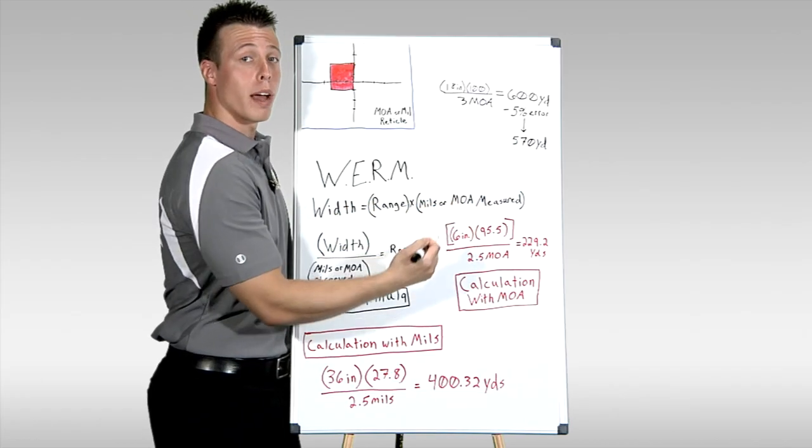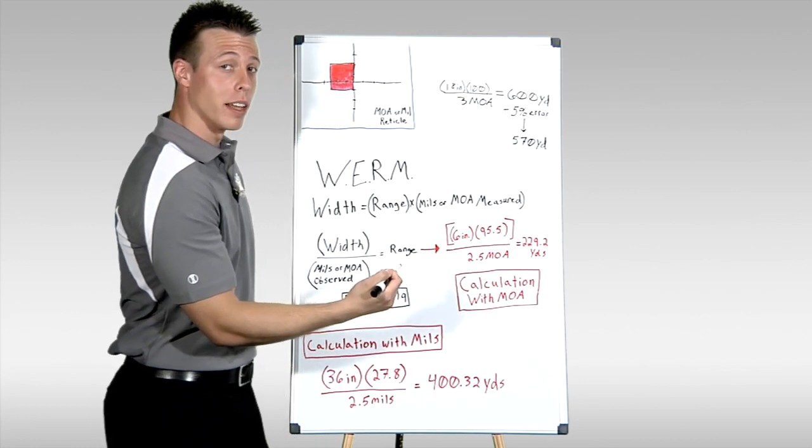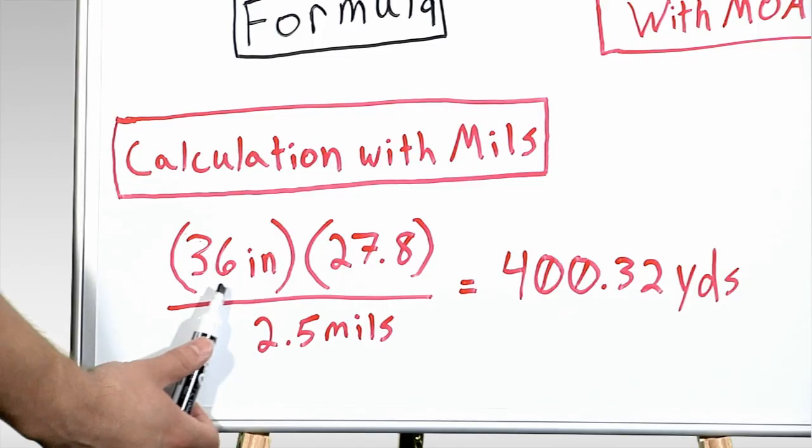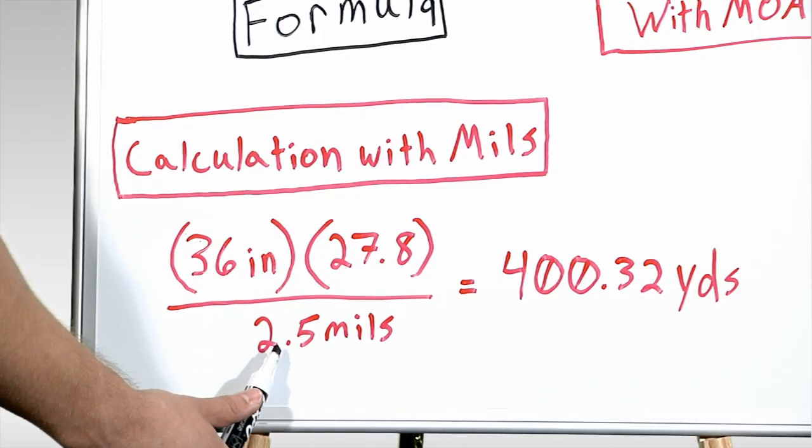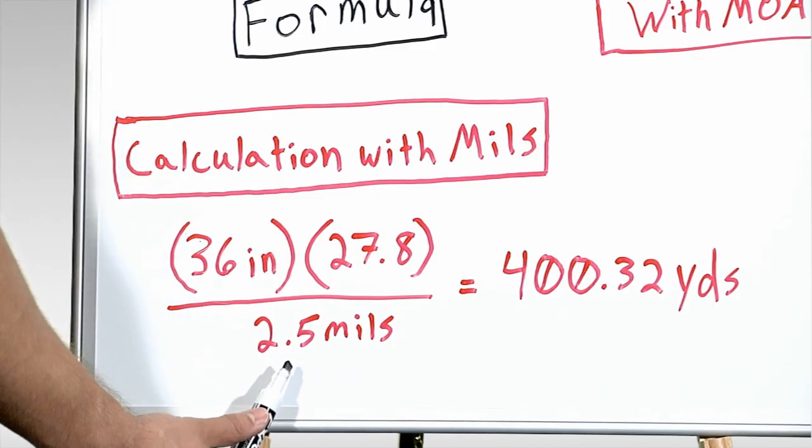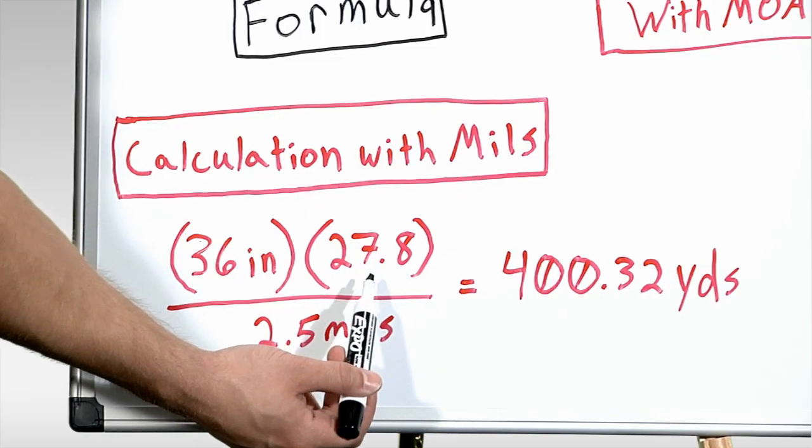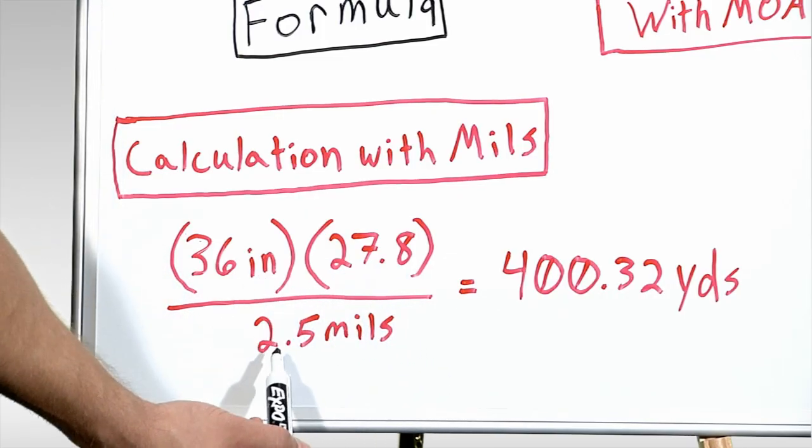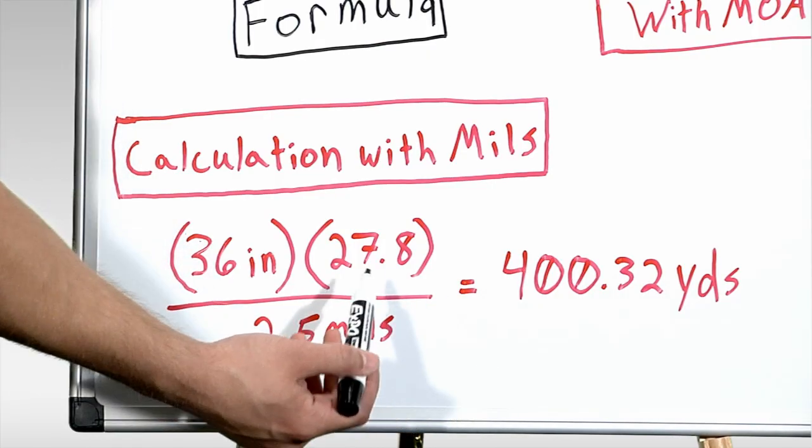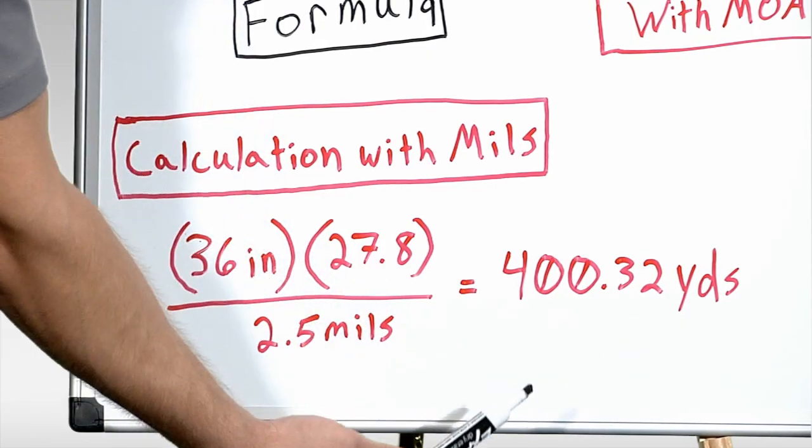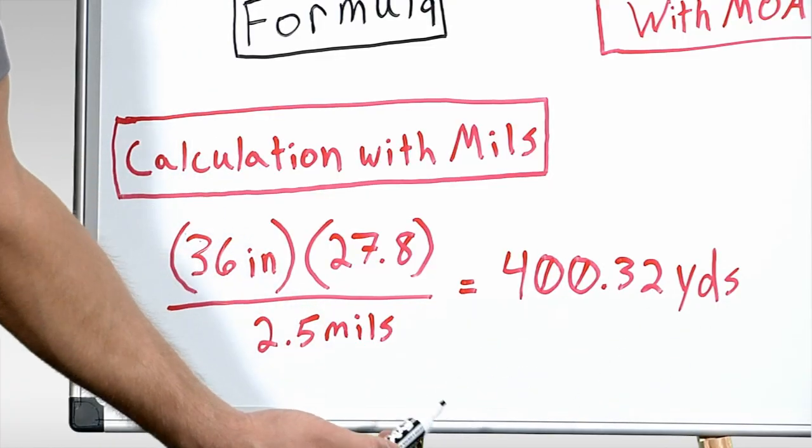Let's mix it up a little bit. Let's try a problem with mils instead of minute of angle. So if we look down here, we'll say our target is 36 inches wide, a one yard wide sheet of cardboard. And again, we're milling out our target, and we see that it takes up 2.5 mils instead of 2.5 MOA. We use our number, in this case, 27.8. This is the number that keeps our inches in relation to our mils to give us an accurate yardage. And when we do this math, we see that we're given 400.32 yards, or 400 yards for the sake of simplicity.